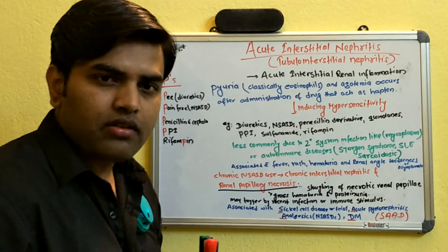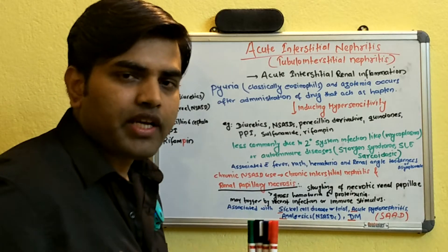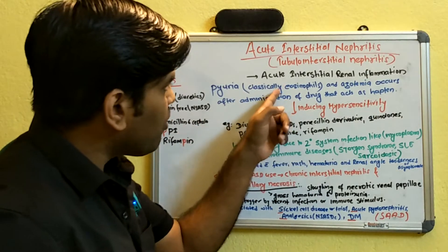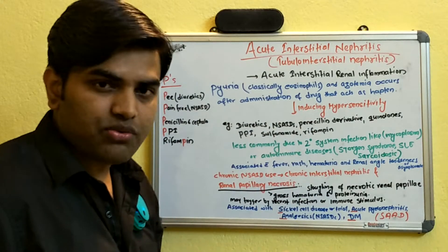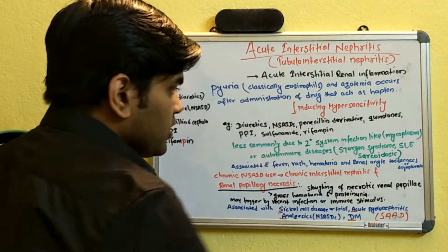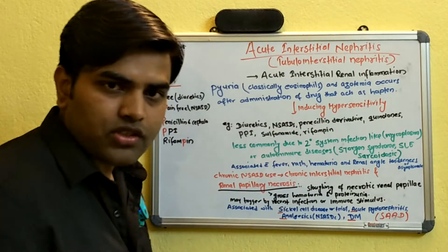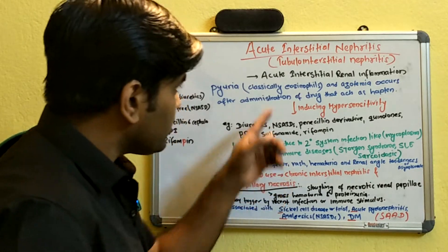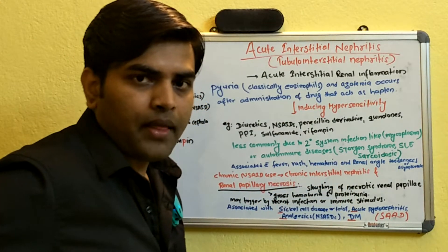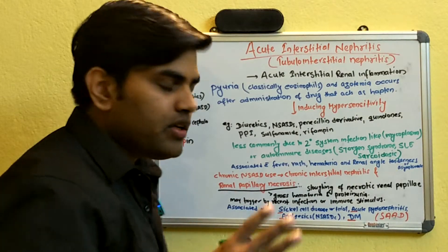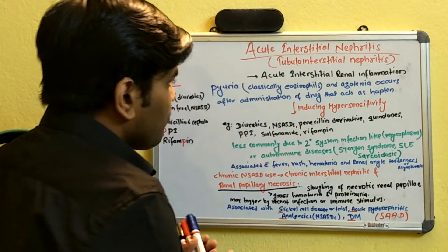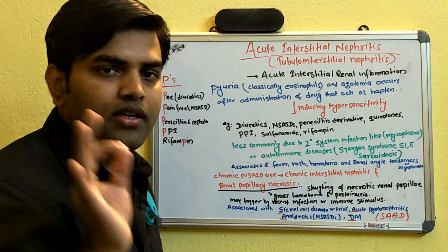The clinical presentation can vary. After drug administration, the patient may be asymptomatic. On urine examination, eosinophils will be found. Patients may also present with fever due to the hypersensitivity reaction. The presentation may include fever, rash, hematuria, and costovertebral angle tenderness. However, patients do not always present with fever and tenderness — they may be completely asymptomatic.